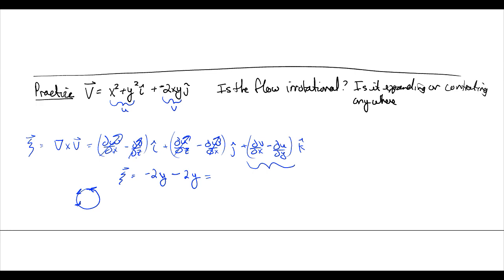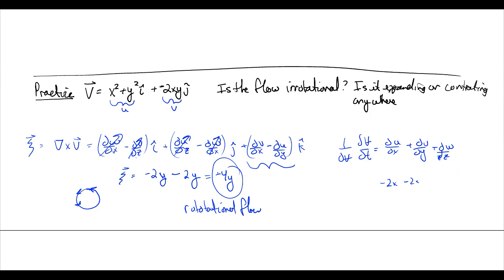And now, is it dilating? Well, we looked at this earlier, and we got when we plug it in, we get our dilatational expression is equal to the partial of u with respect to x, plus the partial of v with respect to y, plus the partial of w with respect to z. And we plugged this in, and we got negative 2x minus 2x is equal to 0. So it is incompressible, or at least it's not changing in density, but it is rotating, because we got a non-zero value for our vorticity.